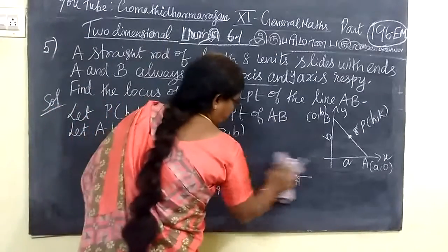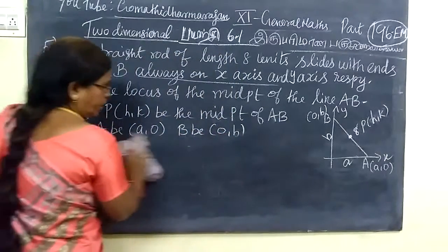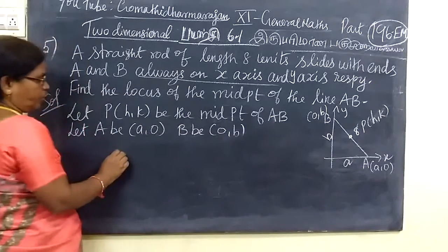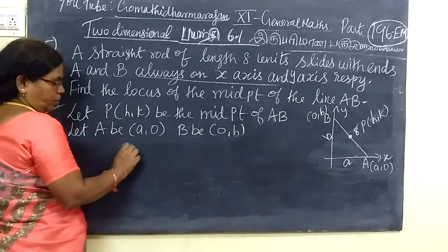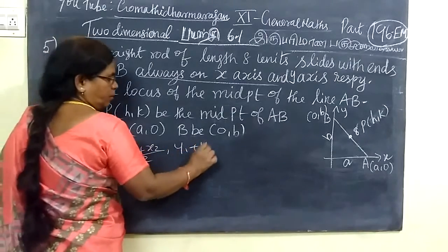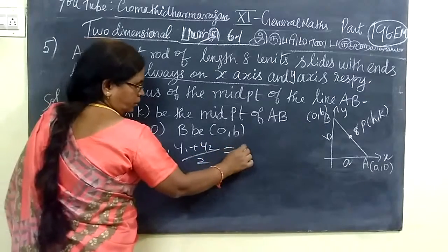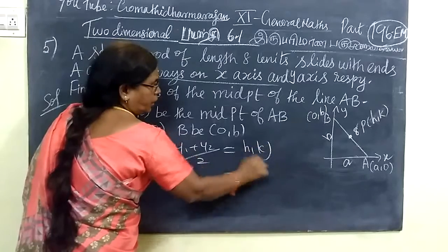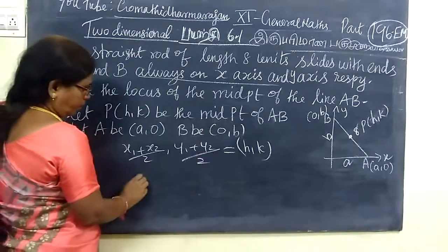We know the midpoint formula: (x1 + x2)/2, (y1 + y2)/2. It is given P(x, k). So x1 is a, x2 is 0 by 2, then 0 plus b by 2 equals (x, k).